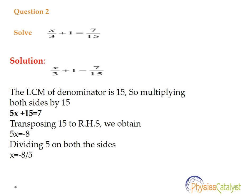Now we transpose 15 to the right-hand side, we get 5x equals minus 8. Again divide by 5, we get x equals minus 8 by 5.